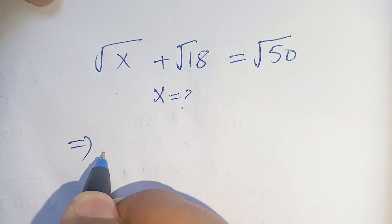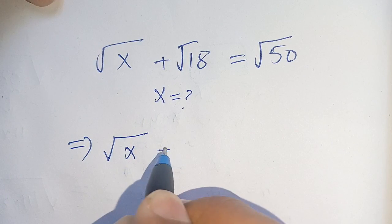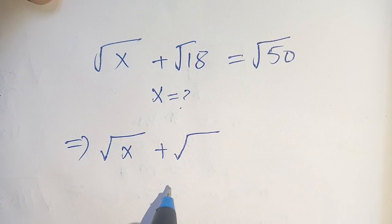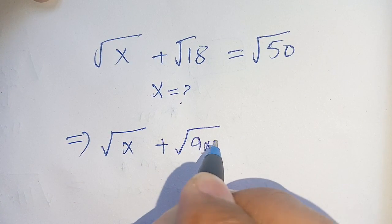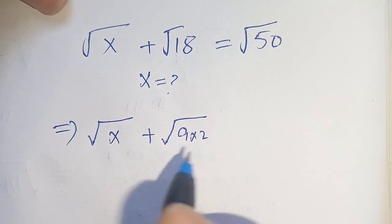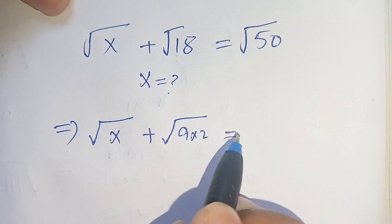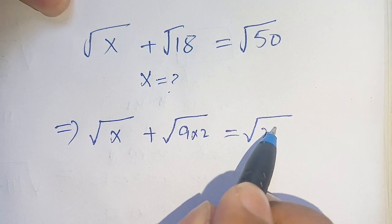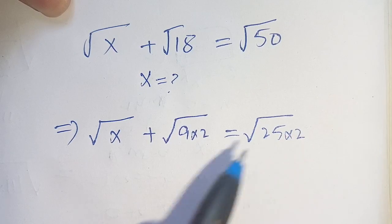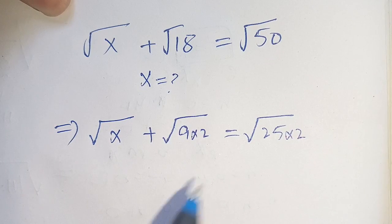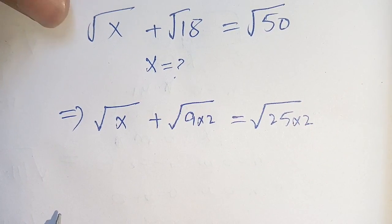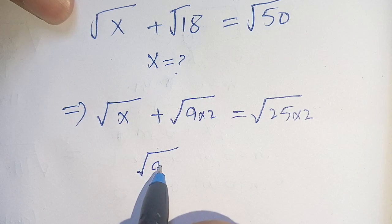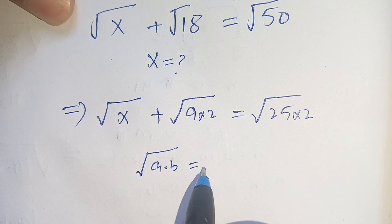We can rewrite square root of 18 as square root of 9 times 2, since 9 times 2 equals 18. And square root of 50 can be written as square root of 25 times 2, since 25 times 2 equals 50.